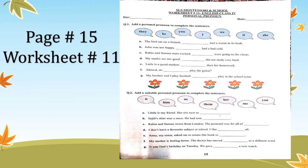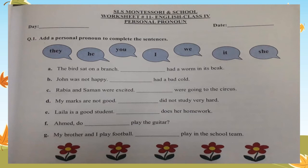Now let's move on to the next page — page number 15, worksheet number 11. Write down today's date and day in the spaces given. Let's look at question number 1: add a personal pronoun to complete the sentences. The pronouns given are: they, he, you, I, we, it, and she. Make sure you know which personal pronoun is used with which type of noun. 'The bird sat on a branch. Blank had a worm in its beak.' Bird is an animal, so we use 'it'. The bird sat on a branch — it had a worm in its beak.